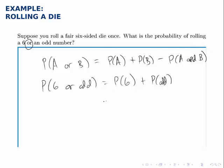The probability of rolling a six or an odd number is equal to the probability of rolling a six plus the probability of rolling an odd number. The probability of rolling a six, well there's one six and six total numbers, so that's one out of six. Rolling an odd, there's three odd numbers, one, three, and five, and six total possibilities. Adding those up, we get four out of six, or two thirds, or 0.67, or 67% if you like.